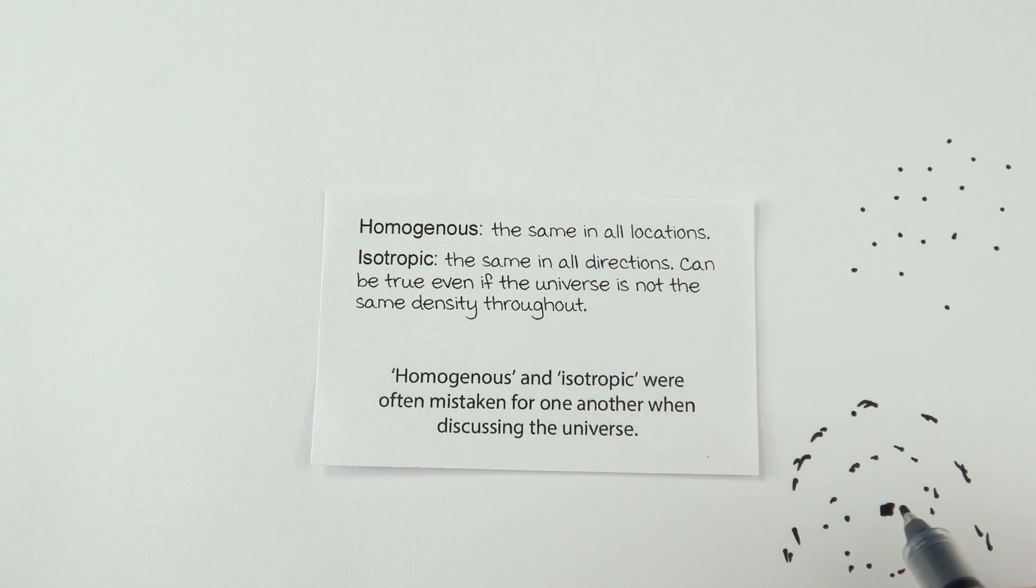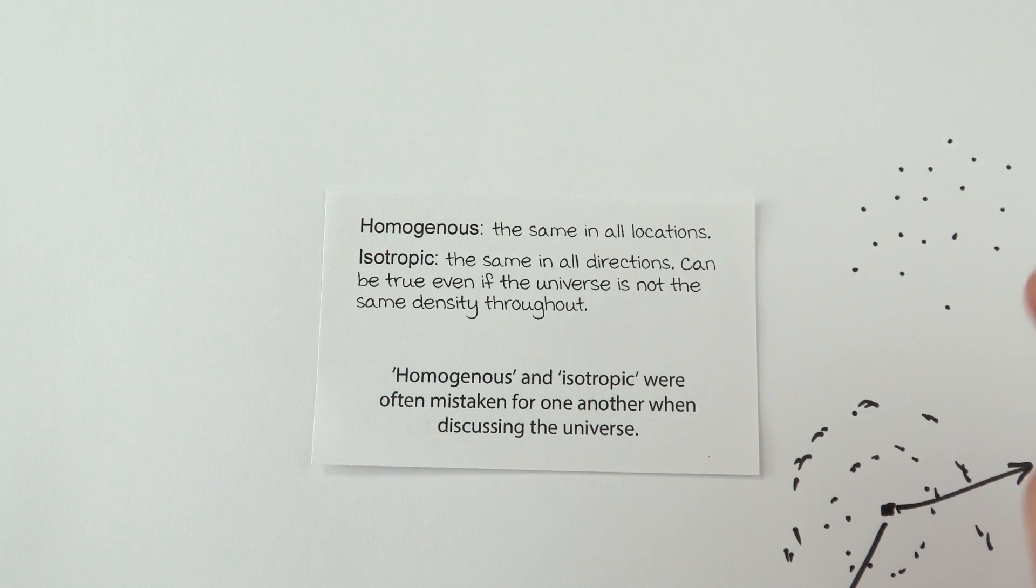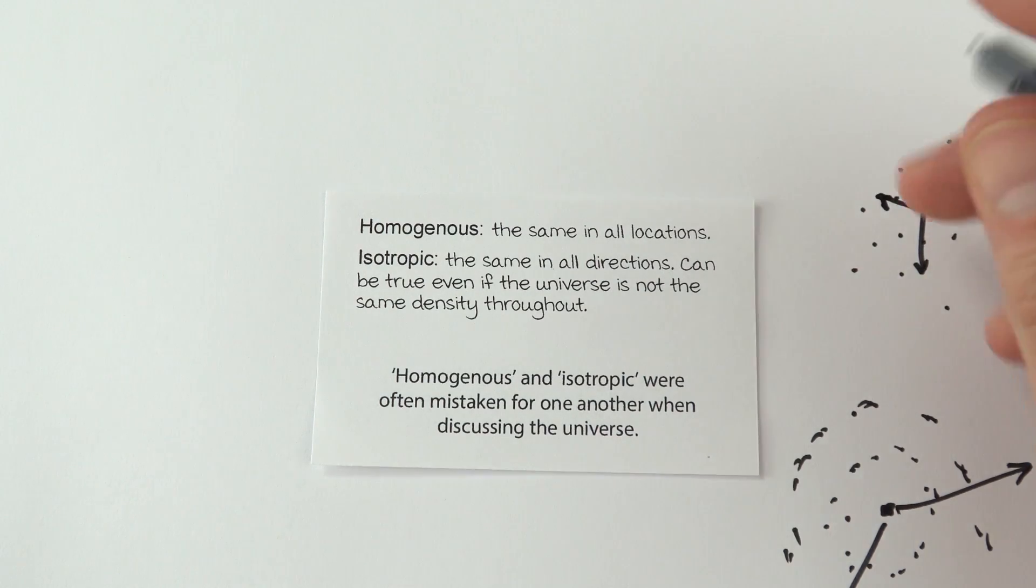How can you have something which is the same in all directions? Well, if you had something like this, where you were in the middle, this is us in the middle, and we might have rings of stuff like this. If you look this way, you see it's not dense, then it's dense, and it's not dense, and it's dense. So this way you go like low, high, low, high density. This way you go low, high, low, high density. This is isotropic because whichever direction you look in, you would see the same pattern of density. It is not homogenous. Instead, our universe is homogenous and isotropic. So wherever we are, we look in any direction, and we see the same sort of average density of the universe in all directions.